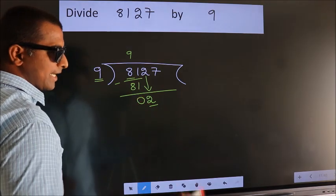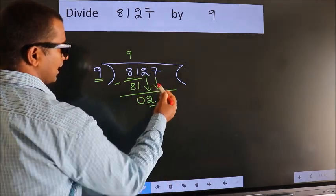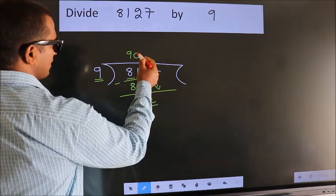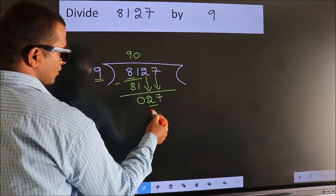So we should bring down the second number. And the rule to bring down the second number is to put 0 here. Then only we can bring down this number. So, 27.